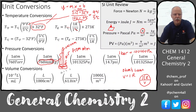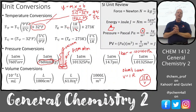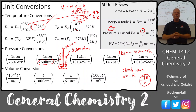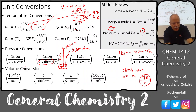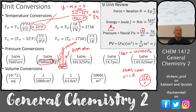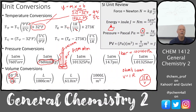Volume conversions: 1 liter = 61 cubic inches; 1 cubic meter = 1000 liters; 1000 cm³ = 1 liter. Written as 1 liter = 10³ milliliters — 'milli' by definition is 10⁻³ — to reinforce the metric system.